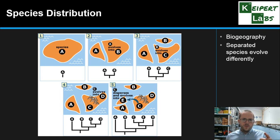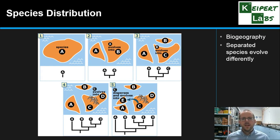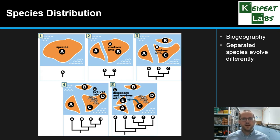So we've looked at comparative anatomy, embryology, the fossil record, DNA comparisons, and species distribution. Each of these five different lines of evidence supports the theory of evolution — that organisms that exist now have changed from those in the past. It gives further evidence that this theory best explains how things have arisen. We wouldn't say there's proof it's true, because in scientific theory we don't really speak in that language, but it certainly is the best scientific explanation that we have. Thanks very much for watching. Bye for now.